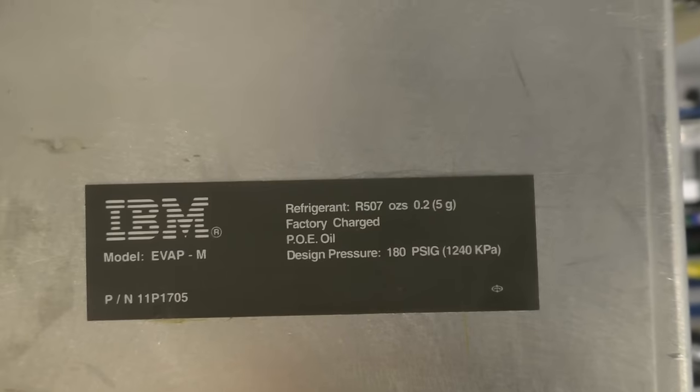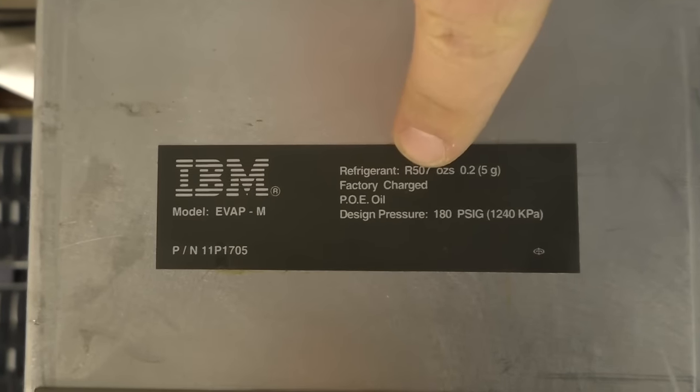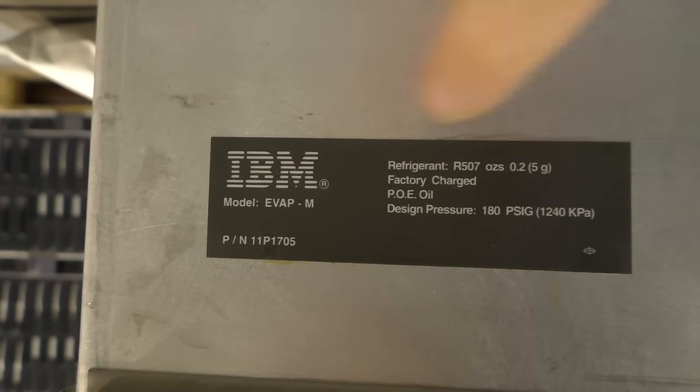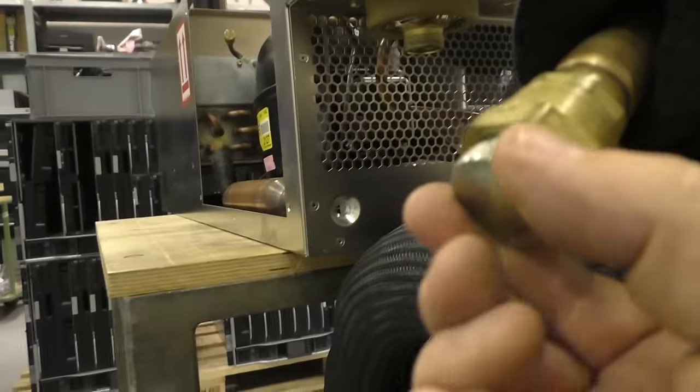There is also some details on this evaporation unit. Part number. You can google that. You won't find a lot. Except that it belongs to a Z900.